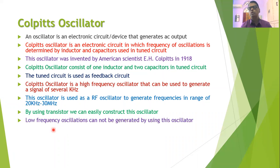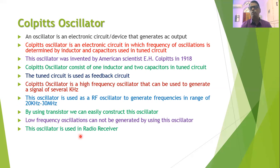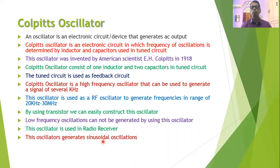Low-frequency oscillations cannot be generated by this oscillator because it is an LC oscillator; the inductor and capacitor values are very small and L and C appear in the denominator of the frequency expression. For low-frequency oscillations, RC oscillators should be used instead. The Colpitts oscillator has wide applications in radio receivers, television receivers, radar receivers, and radio transmitters. Its output oscillations are sinusoidal — in the shape of a sine wave.